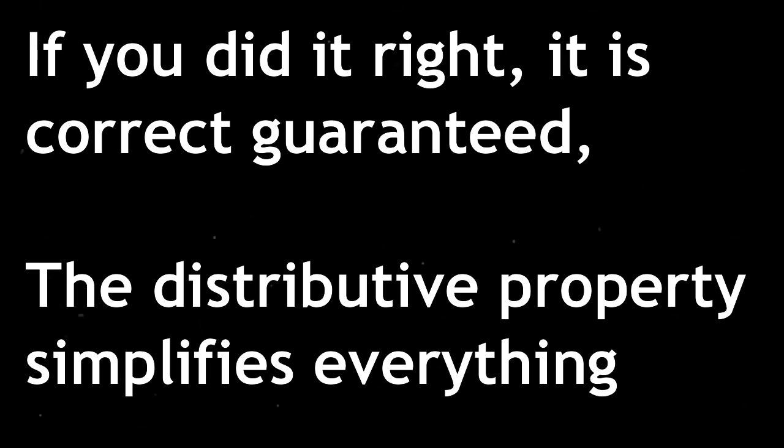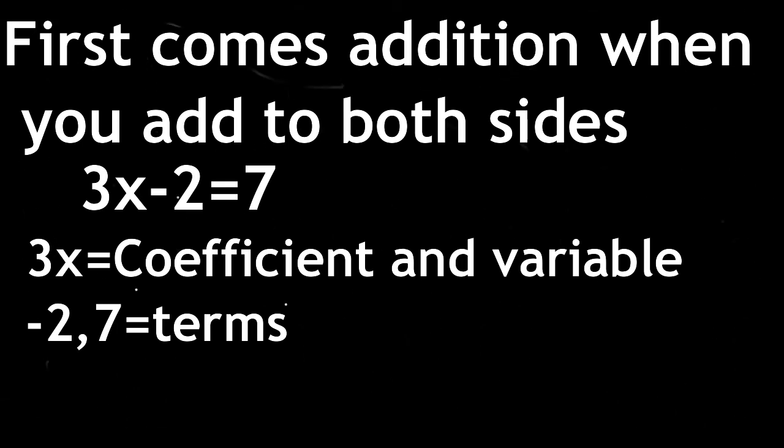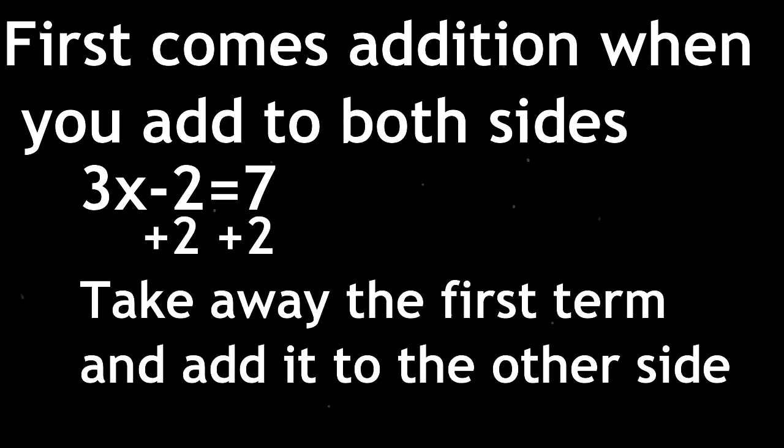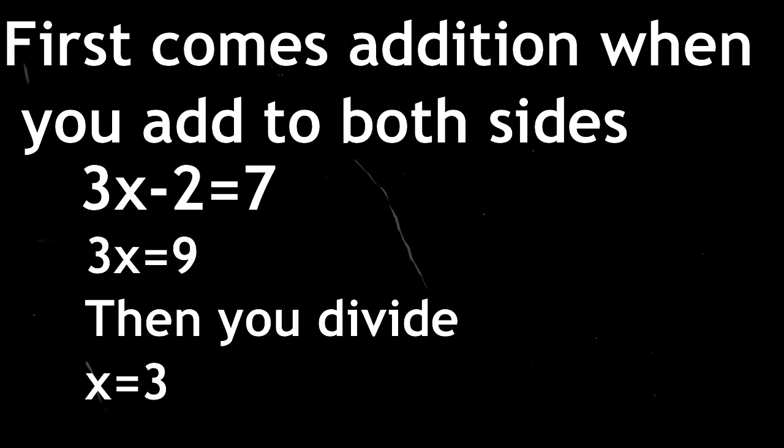it is correct, guaranteed. The Distributed Property simplifies everything. First comes addition when you add to both sides. You just take away the term and add it to the other side. Now 3x equals what you just combined. We just use addition and the next step is divide. Next is subtraction,